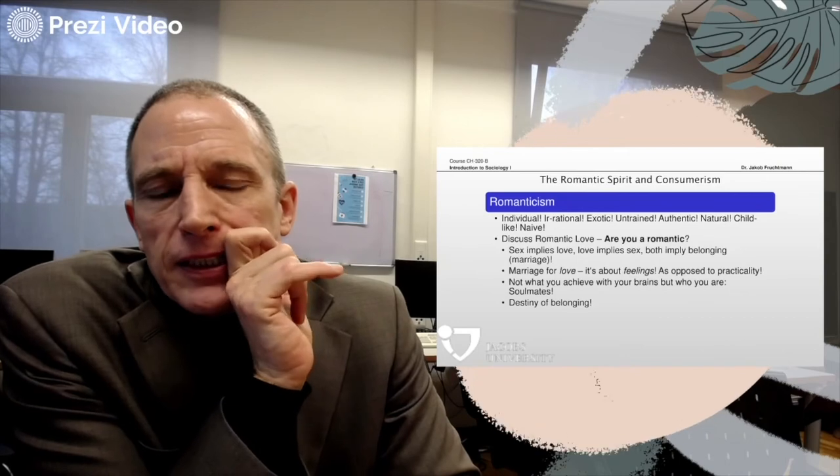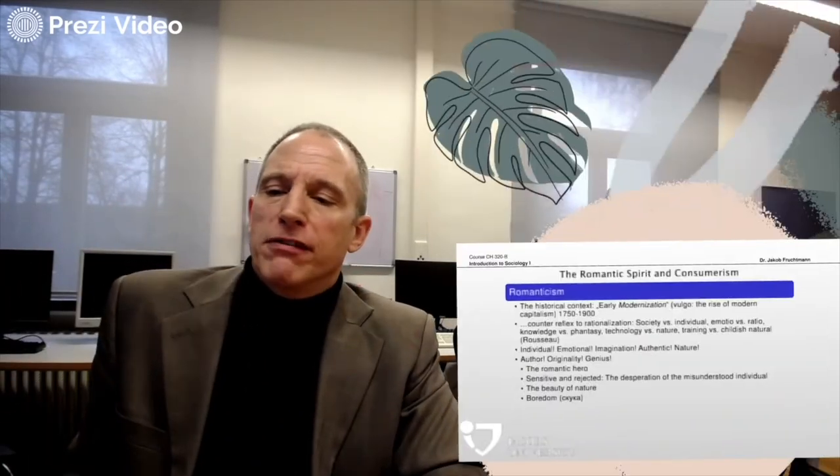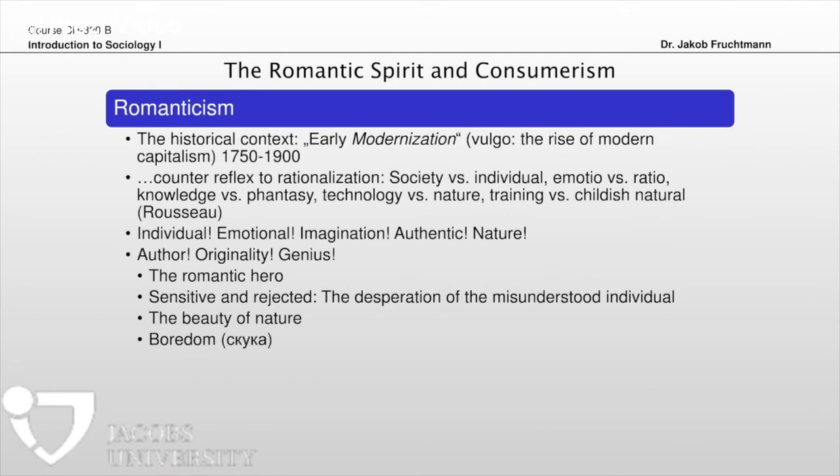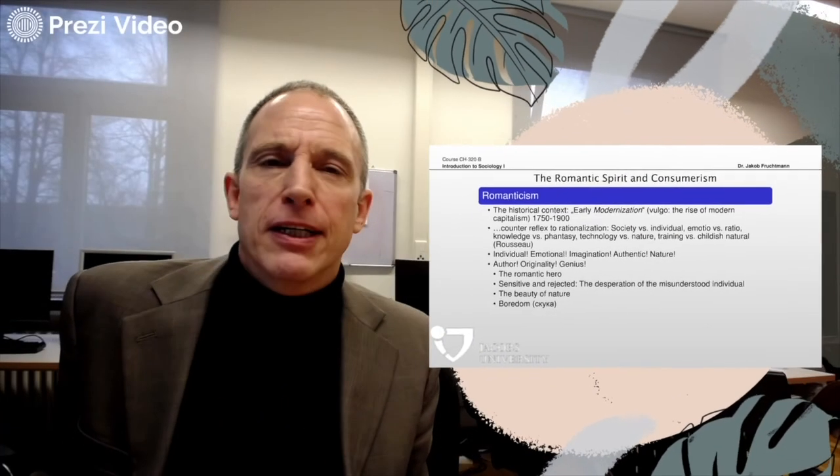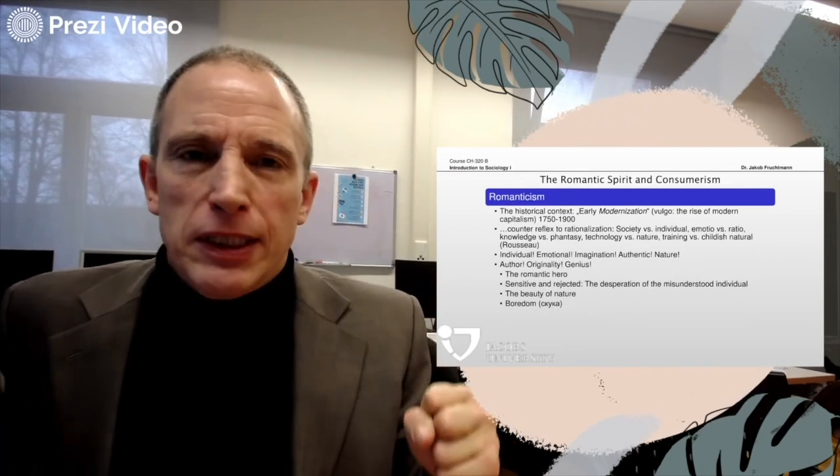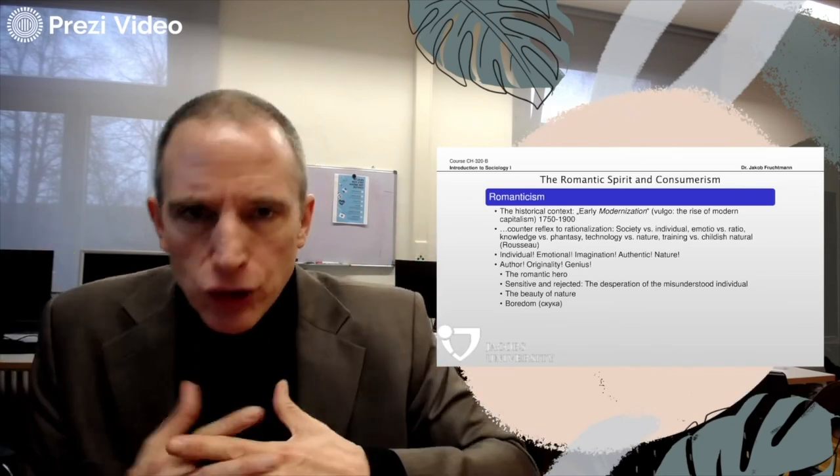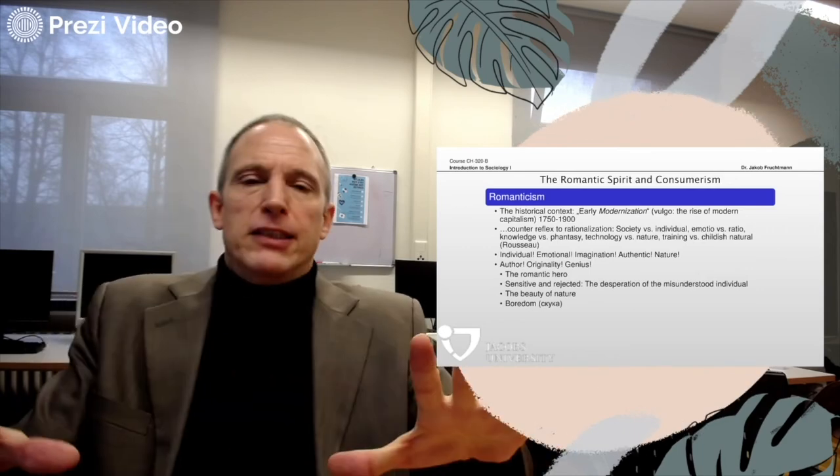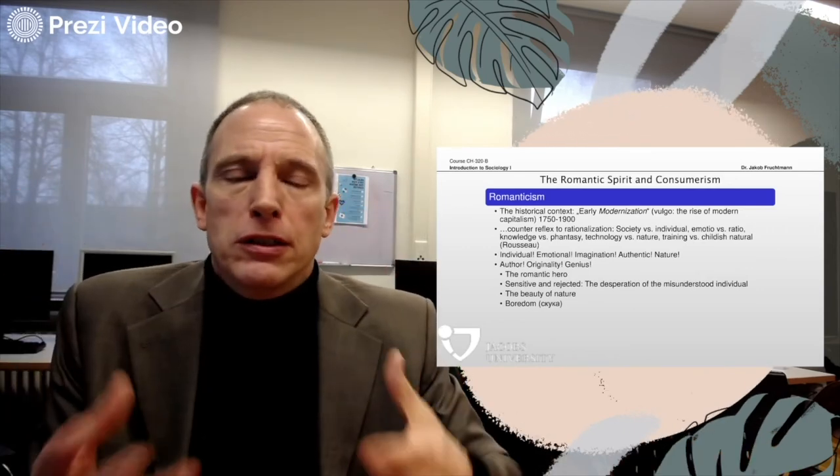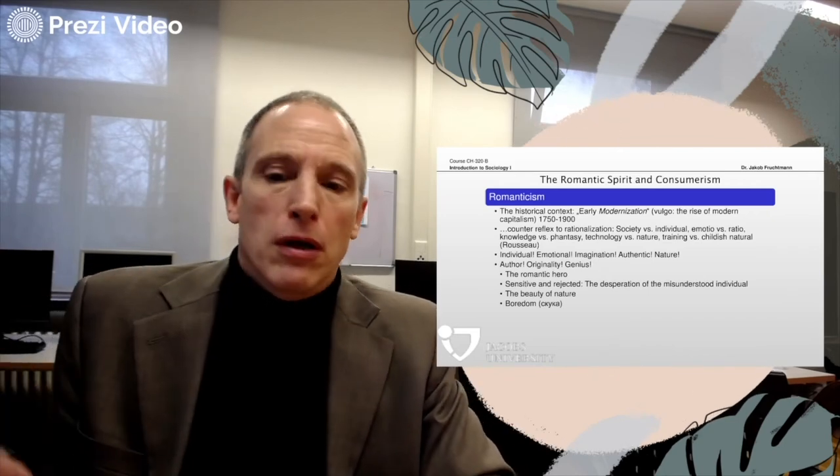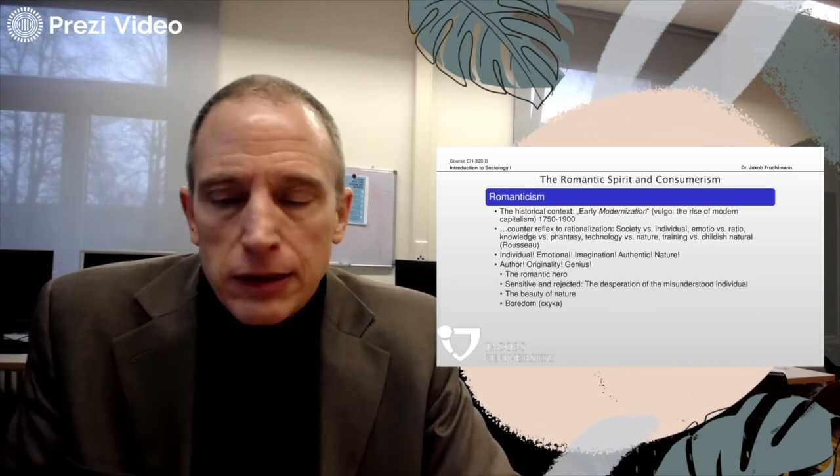So back to our topic. Romanticism is, as I said, a cultural phase, an epoch of our cultural development. And you find it expressed in concepts of the romantic hero, of sensitivity and rejection, of the idealization of beauty, of nature, of boredom. All this is part of a reflex, as one might quite safely claim, to modernity. Because it's the upcoming modernity and rationalization that makes everything so rational, that gives this reflex, that technicizes everything, that educates everything, that makes everything a question of knowledge, that gives the reflex of wanting back to nature, back to authenticity, to unlearned, to untrained, to original, authentic, me and self-individual expression. This is a very important concept in the history of our psychology and it's closely connected to modern capitalism.